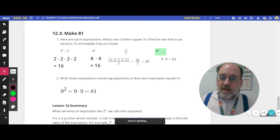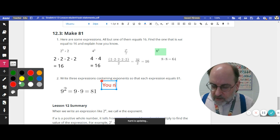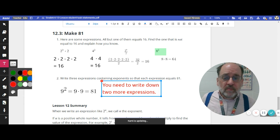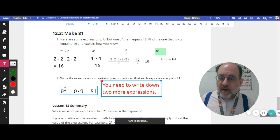So there's one expression. There's three. So what you need to do is you need to write down two more expressions. I've gotten you started. For your credit on this problem, you need to write down two more expressions that will be equal to 81 that use exponents.